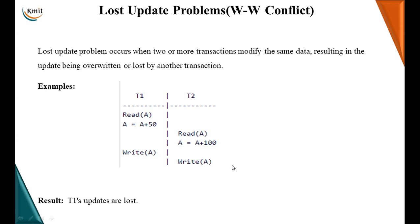Let us try to see what is a lost update. Here, when I talk about this particular problem, it occurs when two or more transactions modify the same data resulting in the update being overwritten or lost by another transaction. When I say I allow simultaneous access to the database object by more than one transaction, it may so happen that one of them has read the data.